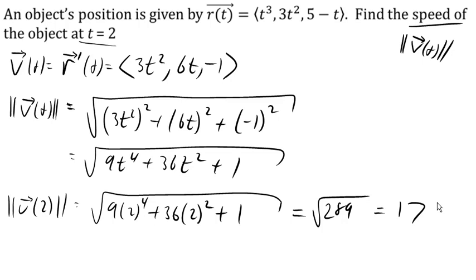Again, we could have here evaluated our velocity function at 2. Right? And come up with 2 squared is 4 times 3 is 12, 6 times 2 is 12, and 1. And then found the magnitude of that vector.